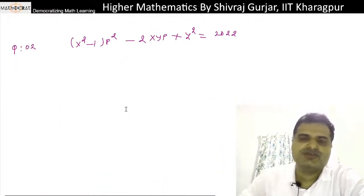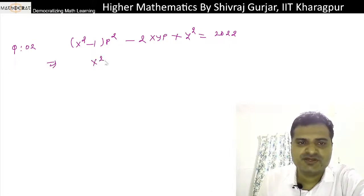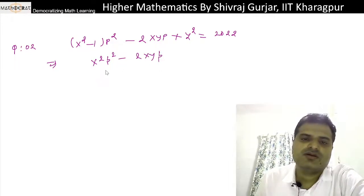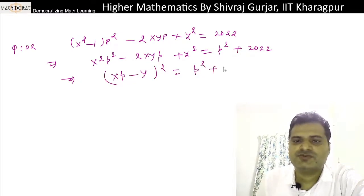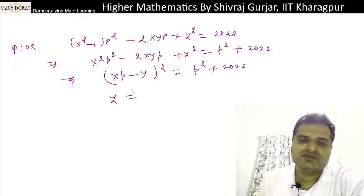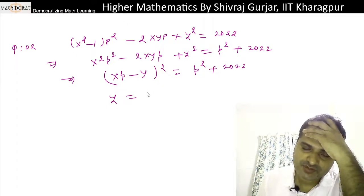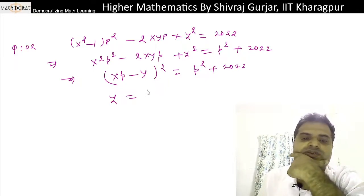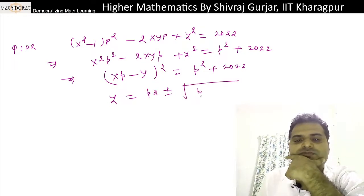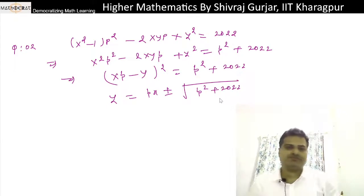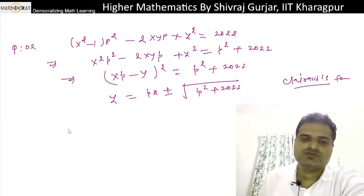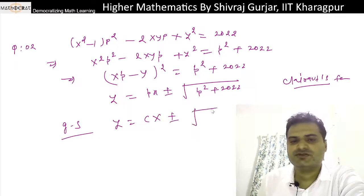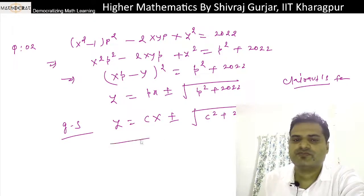For the second question, we can write x²p² - 2xyp + y² = p² + 2022. This is (xp-y)² = p² + 2022. We can write y = xp ± √(p² + 2022). This is Clairaut's form.